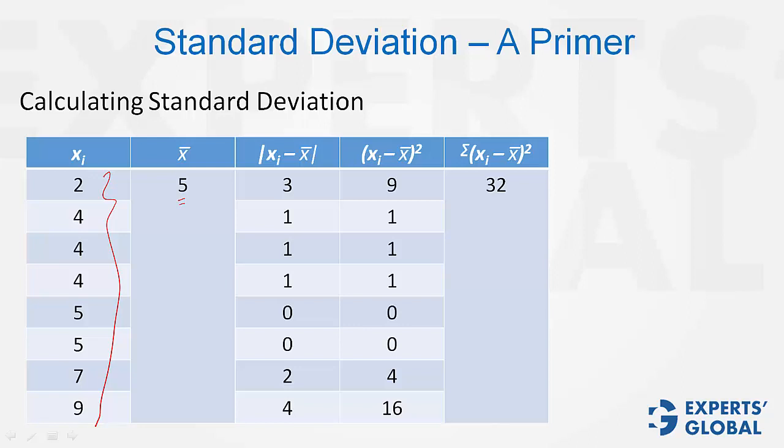Next, take the square of each term in the third column, and then finally, add all the terms in the fourth column. You get 32.